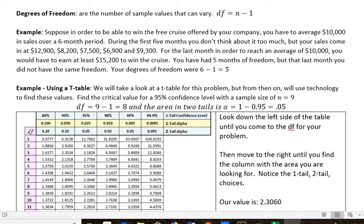Degrees of freedom are the number of sample values that can vary. We use the abbreviation df for degrees of freedom, and it's very simple. Just take your sample size and subtract 1 to get your degrees of freedom.